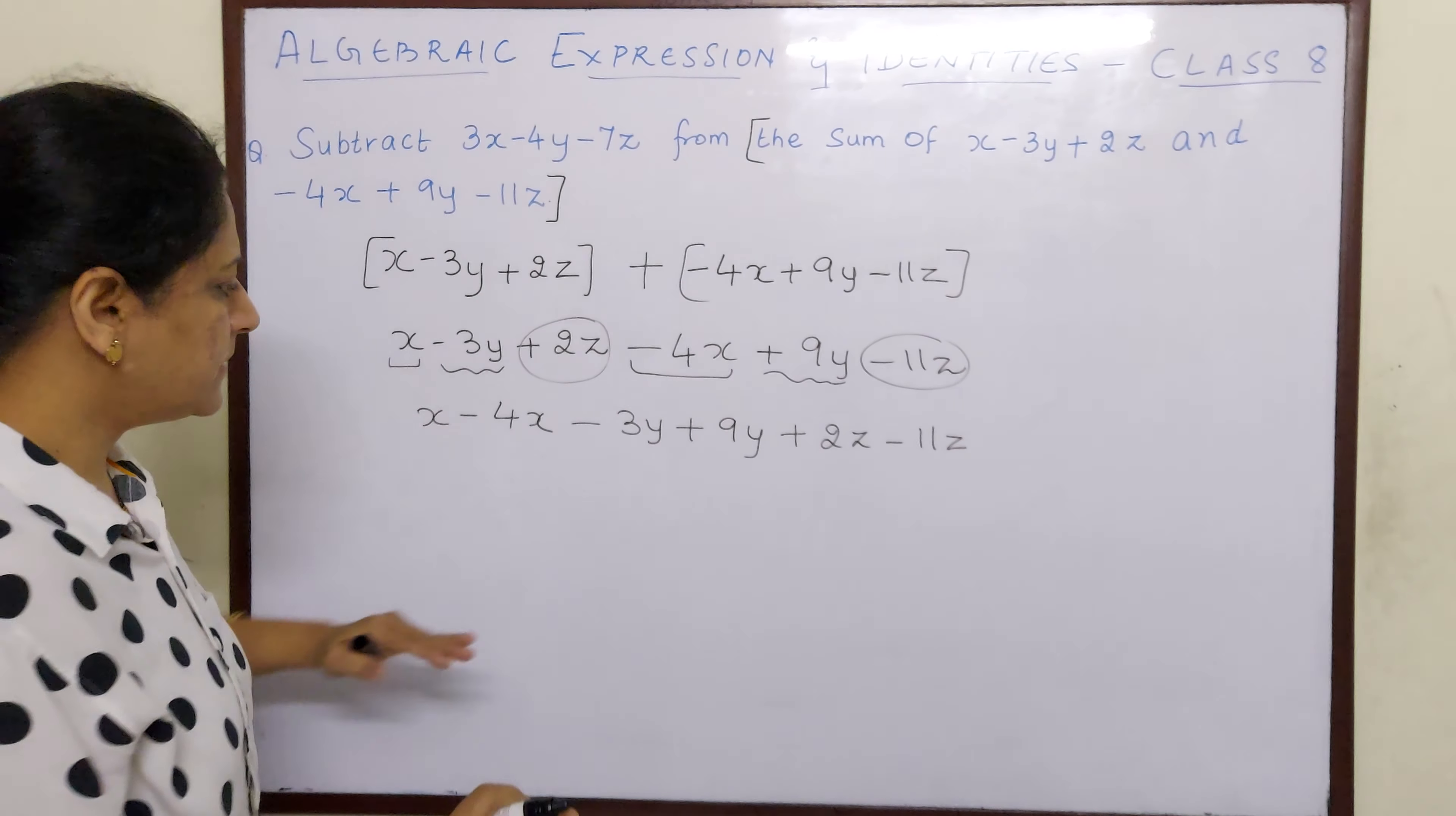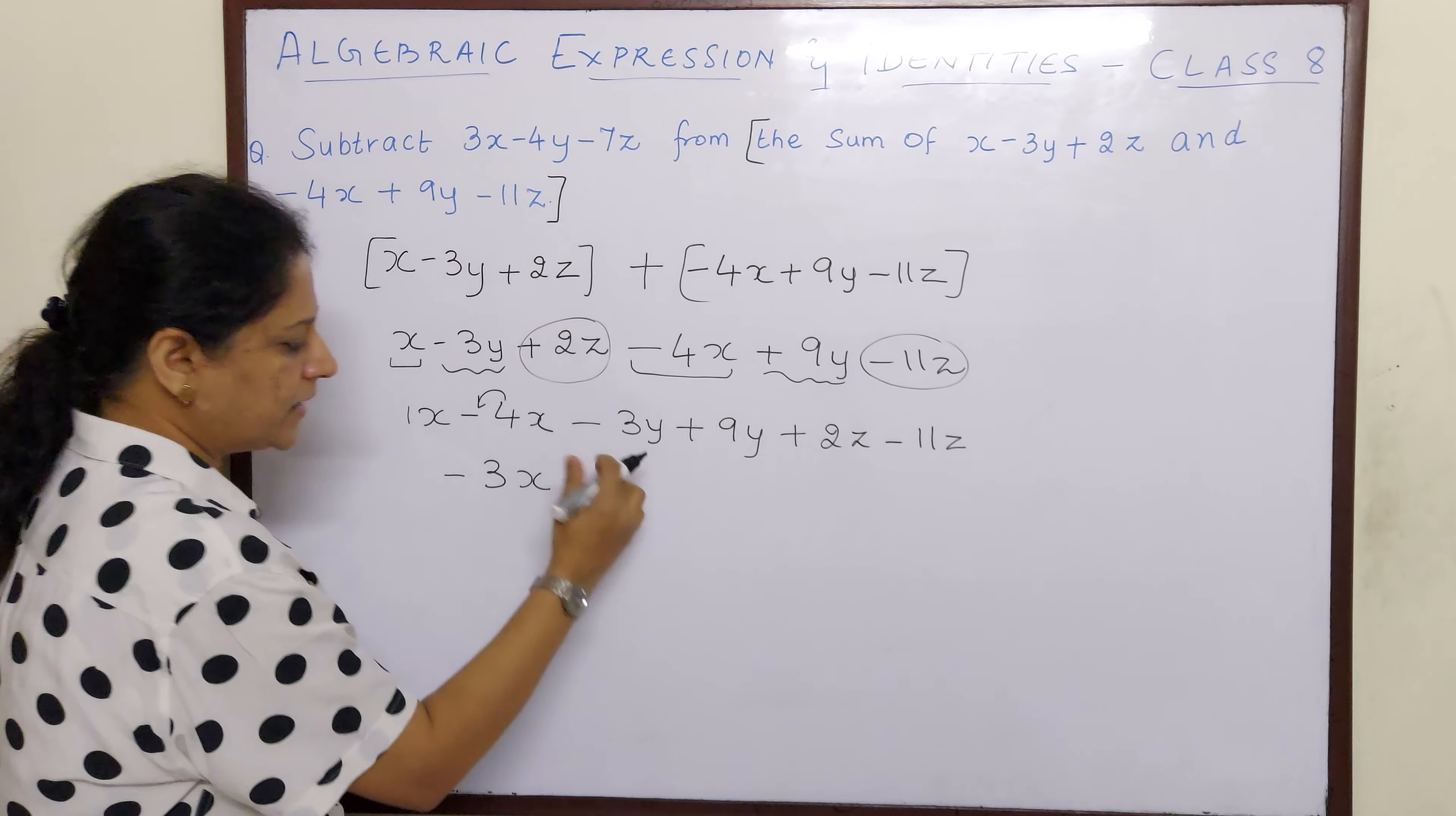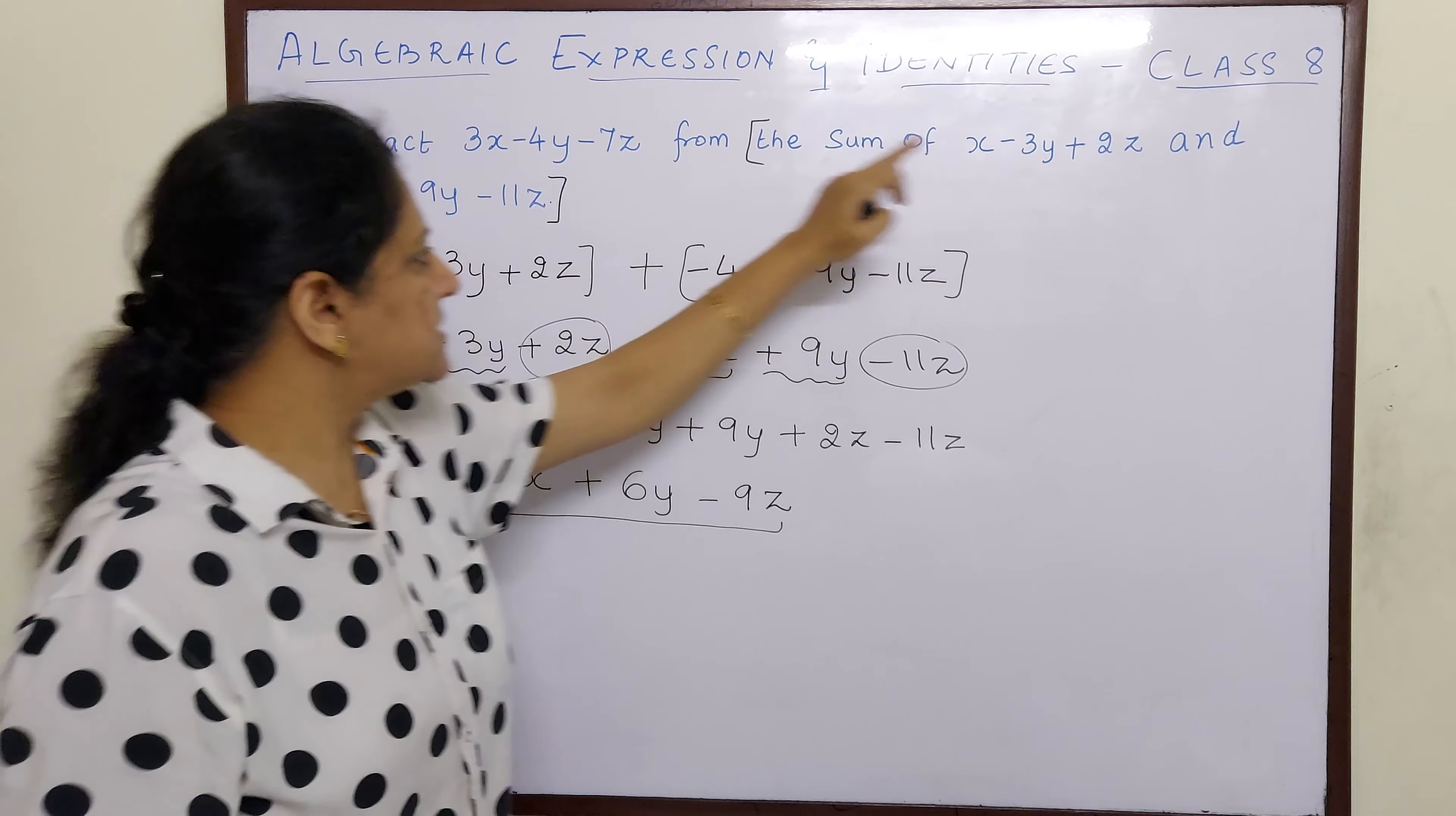Now we have to do simple addition or subtraction. Here there is no number, that means it is 1. If there is 1 positive sign and 1 negative sign, we subtract and put the sign of greater number, and 4 is carrying the sign of minus. Now minus 3y plus 9y: 1 plus 1 minus, we subtract and put the sign of greater number. Plus 2z minus 11z: again 1 plus 1 minus, so I will subtract and put the sign of greater number. So now this is the answer for the sum of this and this.